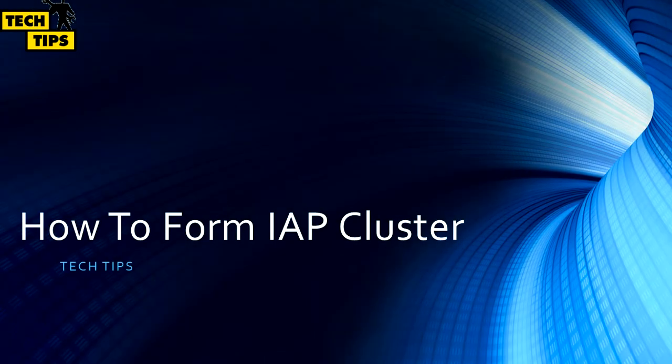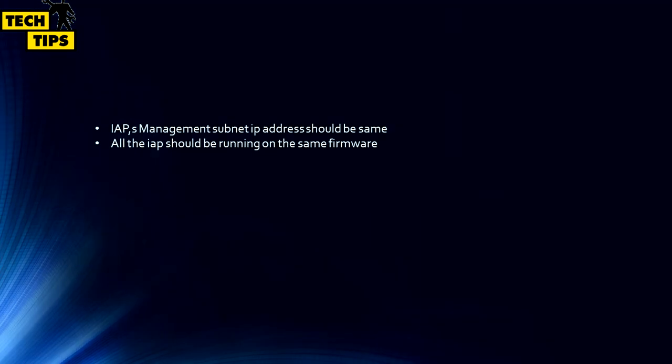Welcome to my channel Tech Tips. Today we showcase how to form a cluster between two IAPs. The IAPs can be of the same model or two different models. To form the cluster between two IAPs, you need to follow two mandatory criteria. The first is both IAPs should have the same firmware version, and the second is both IAPs should have the same management IP address, which can be either from a DHCP server or statically assigned.